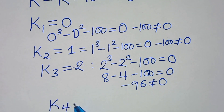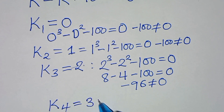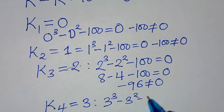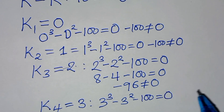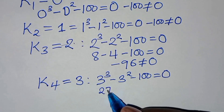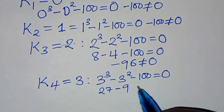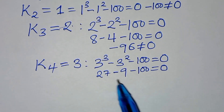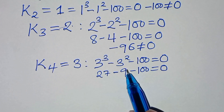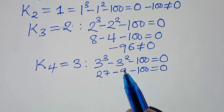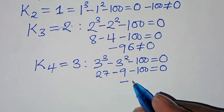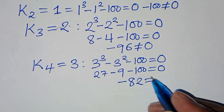Let's move to k₄ equal to 3. Substituting: 3³ minus 3² minus 100 equals 27 minus 9 minus 100. So 27 minus 9 gives 18, then 18 minus 100 equals negative 82, which is not equal to 0.